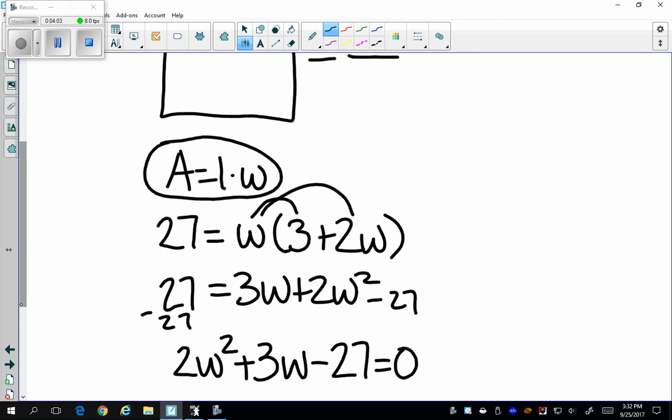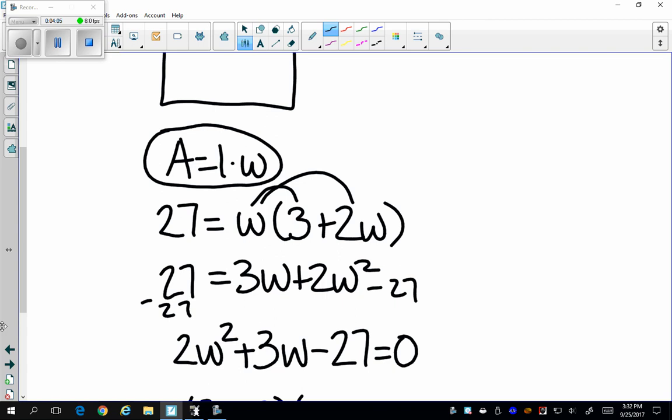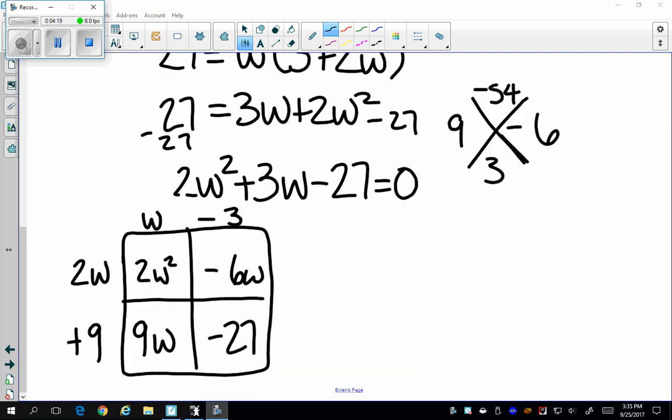Now I need to find two factors that multiply negative 54 but add to 3. And I know those two factors are 9 and 6. Using my factoring box, I get that one of my factors is 2w plus 9 and my other factor is w minus 3.